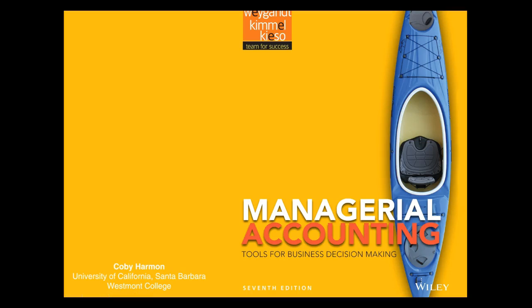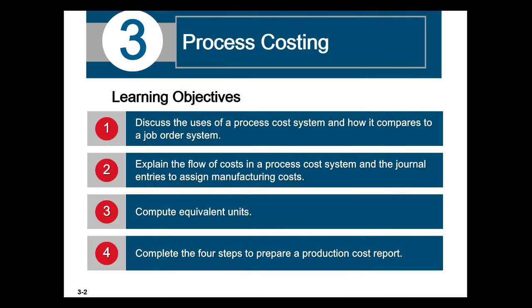This chapter will cover chapter 3 and the process costing system. We are going to talk about how it is unique to the job order system and how we account for the flow of goods. One thing unique in this chapter will be discussing equivalent units, and then from there we'll prepare a production cost report.